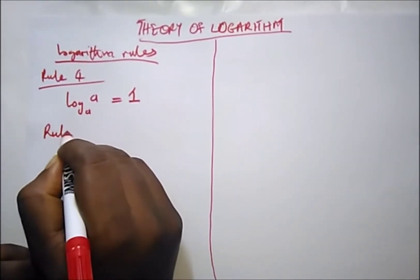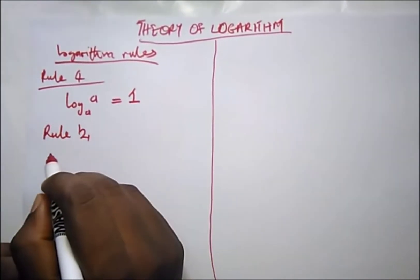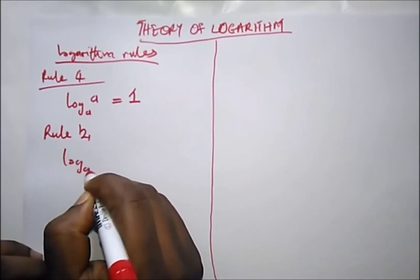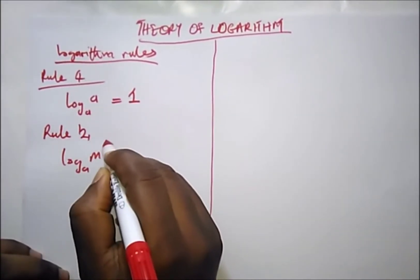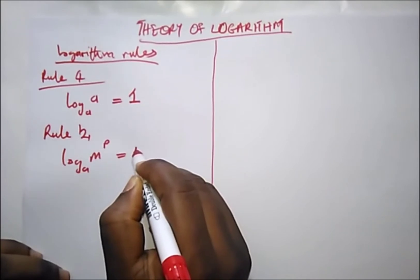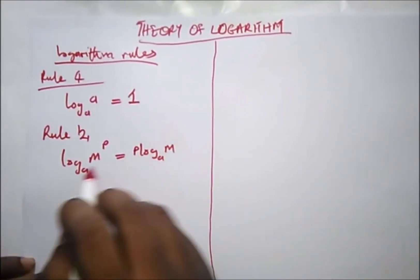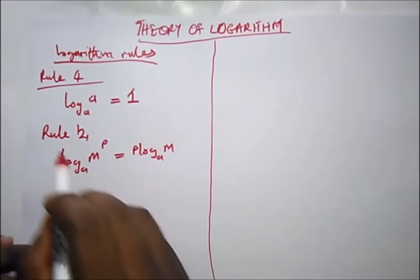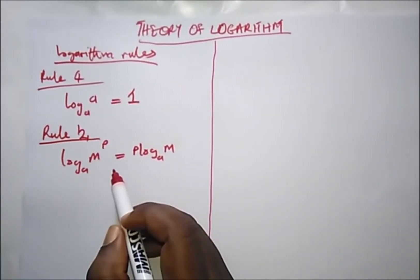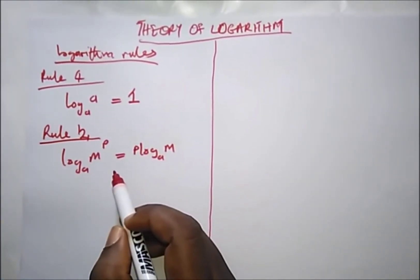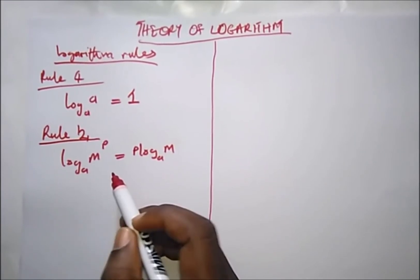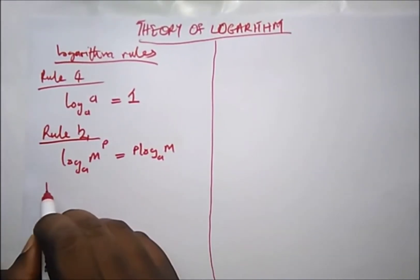Our second rule says log base a of m to the power p is equal to p times log base a of m. The third rule: we are going to see how these rules have been applied in past questions, which I'm going to solve—GCE, WAEC, and JAMB past questions.